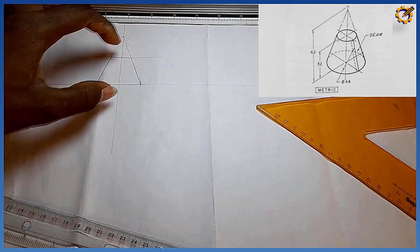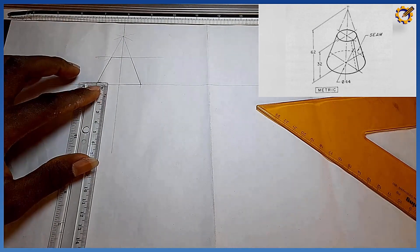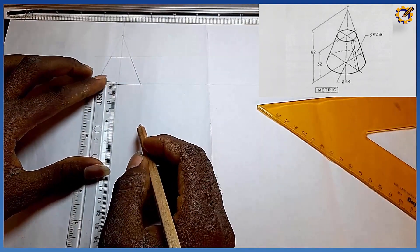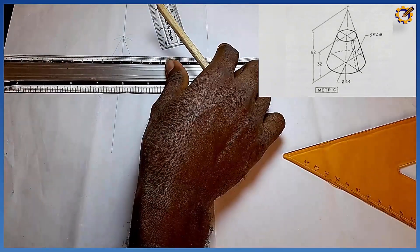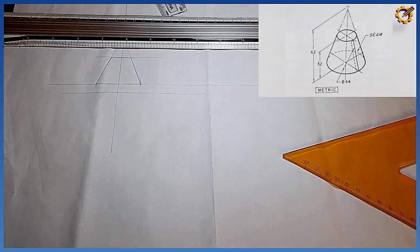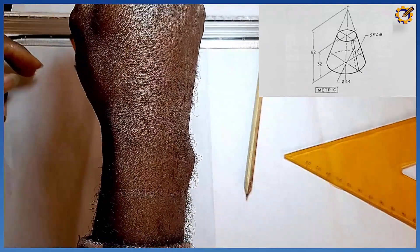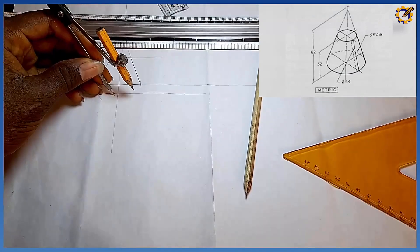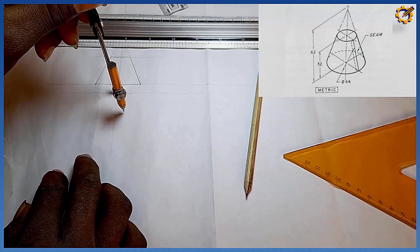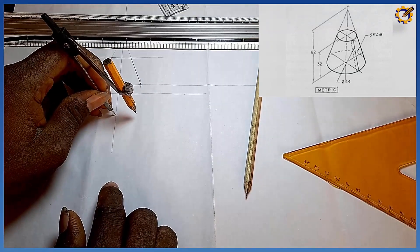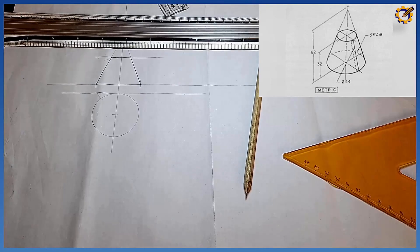We need the surface development, but first I need to get the plan. From the base of the cone, I measure a mark of 10 downwards and project it horizontally. Then with radius 22 — the same radius used earlier — I stand on the vertical line and strike an arc. Wherever the arc touches the vertical line, I place my compass there and draw a circle with radius 22.